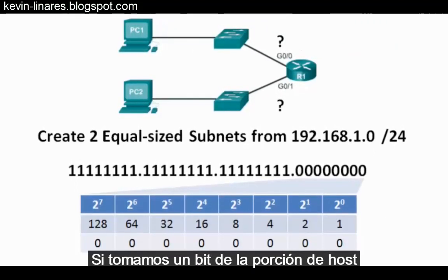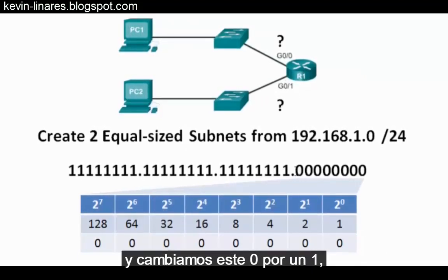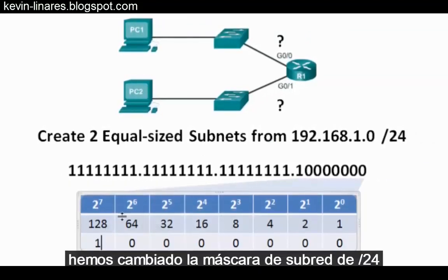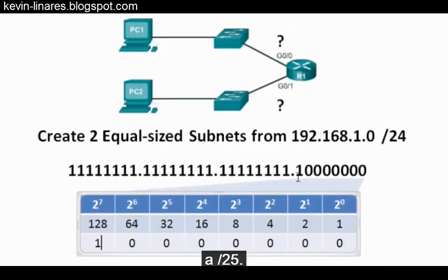If we borrow 1 bit from the host portion and change this 0 to a 1, we've now changed the subnet mask from /24 to /25.